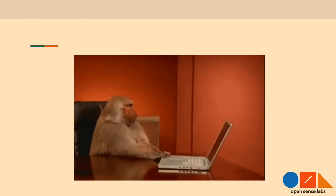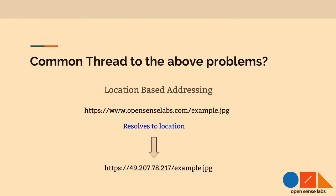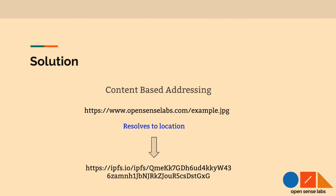Those are the problems we're dealing with. The common thread that connects all of them is location-based addressing. If I was to access a file on my own website, I'd have to do multiple network hops — from New Delhi, it goes to Europe first, then somewhere in the US, and a couple of cities in the US itself. I'm accessing a physical location. The solution is content-based addressing: taking that file, passing it through a hash function, which returns the hash of the file — almost like a digital fingerprint.